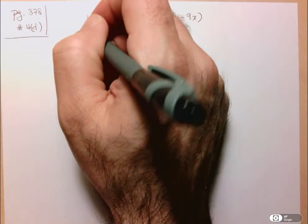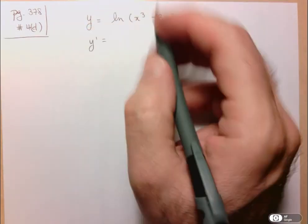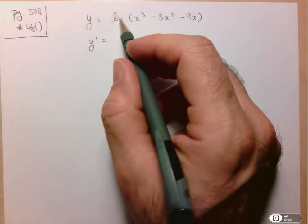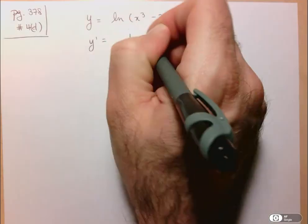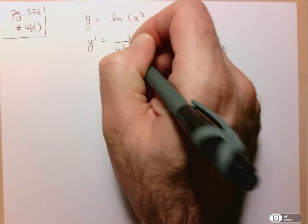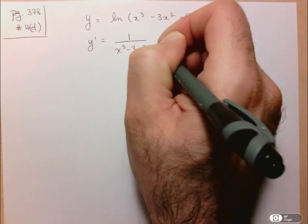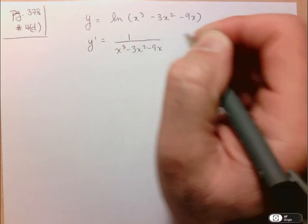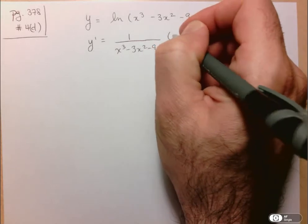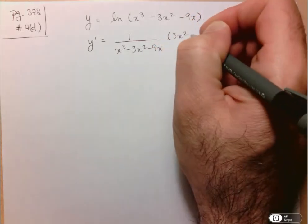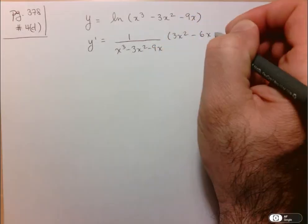So first thing we have to do is find the derivative. Here we have to use the chain rule. Think of this as ln(u), so the derivative of ln(u) is 1 over u, so 1 over x³ - 3x² - 9x. And then we have to multiply that by the derivative of u with respect to x. So that's just 3x² - 6x - 9.